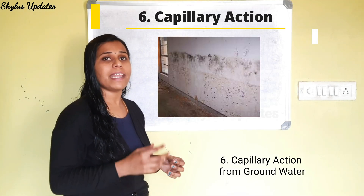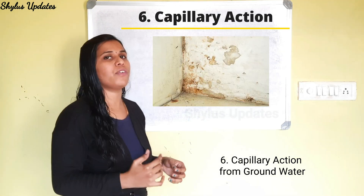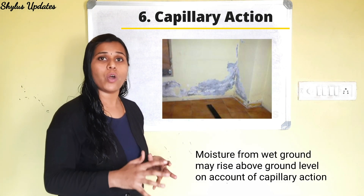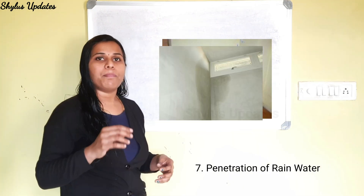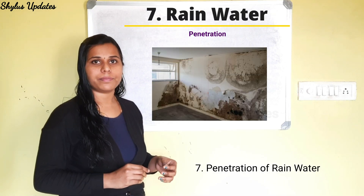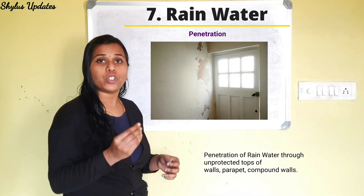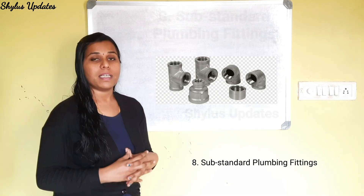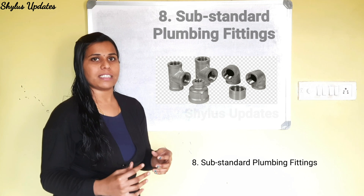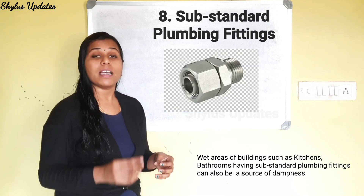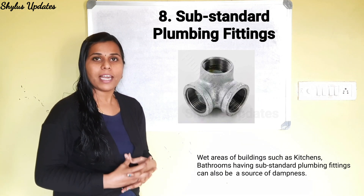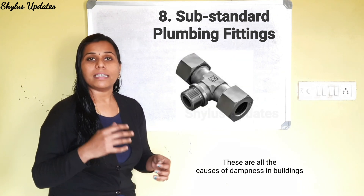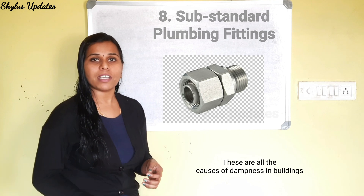Next cause is capillary action from groundwater. Moisture from wet ground may rise above the ground level on account of capillary action. Also, penetration of rainwater through unprotected tops of walls, parapets, and compound walls is a cause. Substandard plumbing fittings in wet areas of buildings such as kitchens and bathrooms can also lead to dampness. These are all the causes of dampness in buildings.